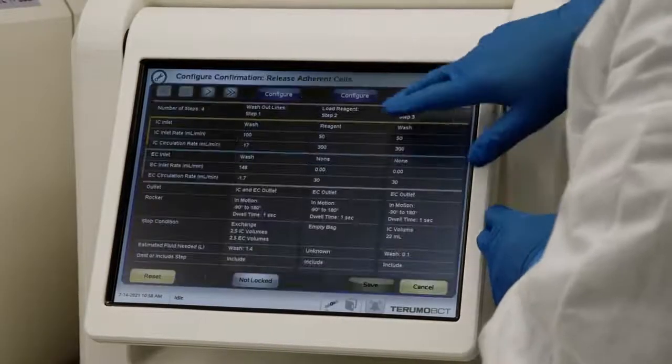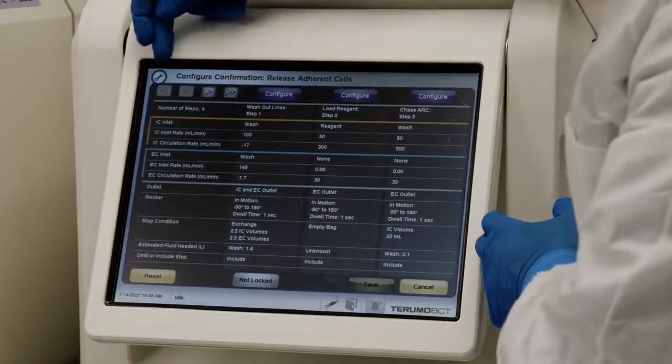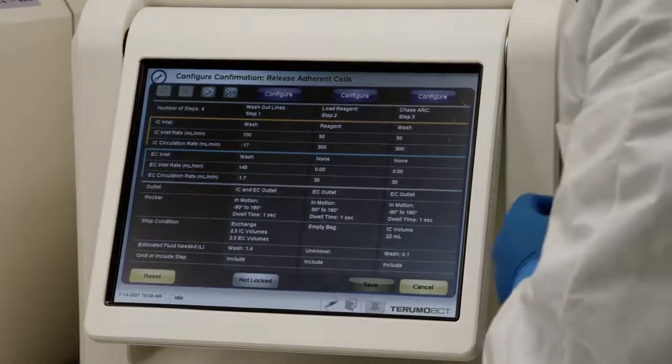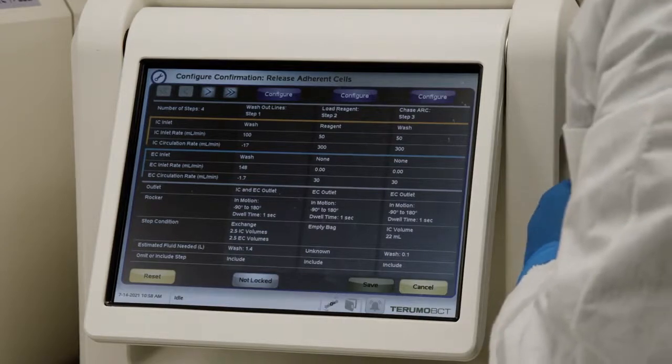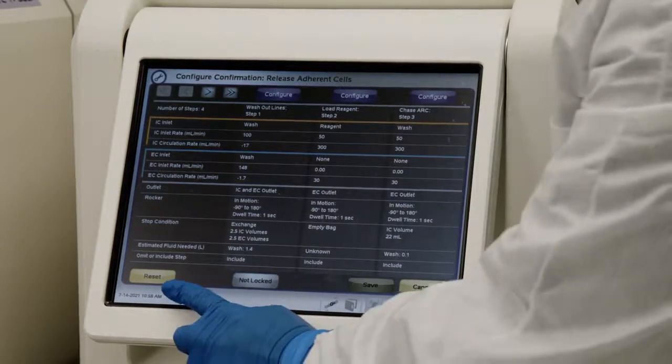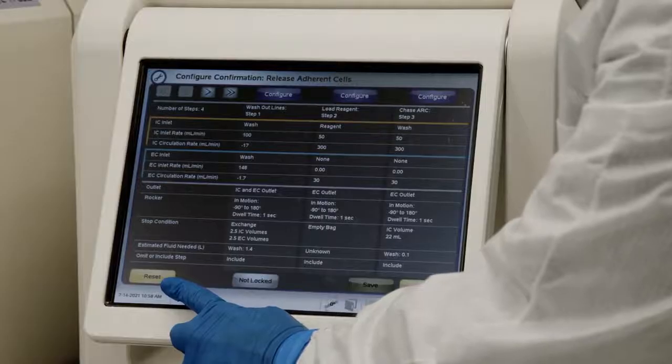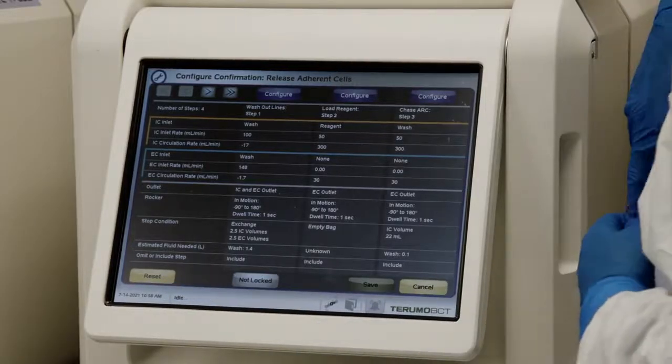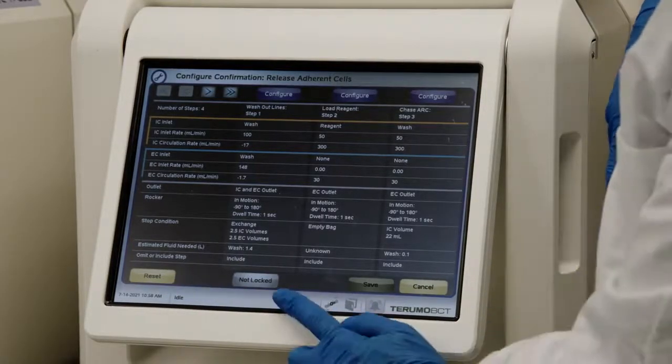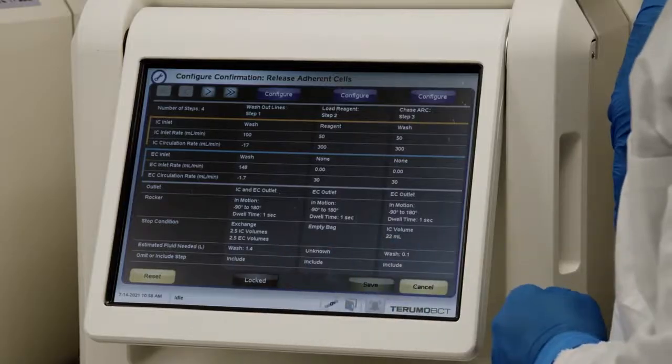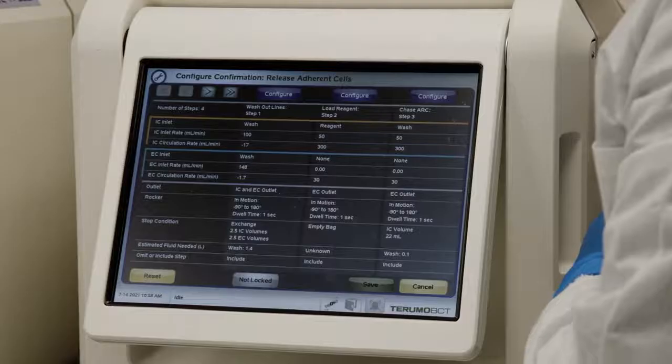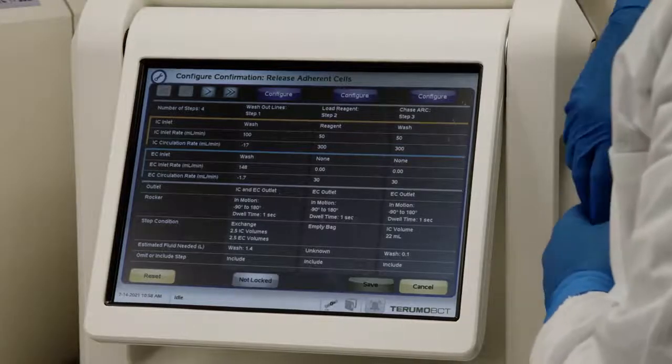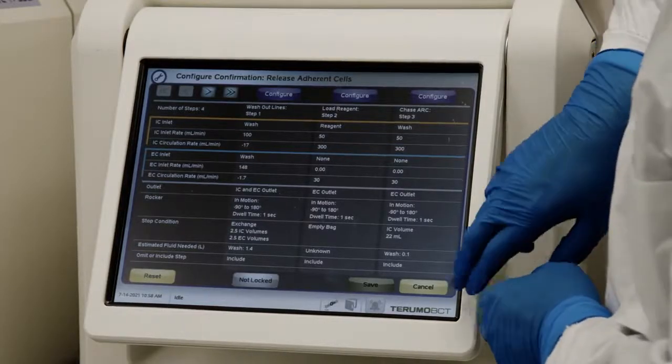On this task settings page, you can see there's a purple button here which is labeled configure and any changes that will be saved here will become the new default task settings. However, you can reset these back to factory defaults by pressing the yellow reset button. Additionally, you can lock these settings such that the operator will not be able to change them when performing a task. Therefore, Quantum is going to be really flexible for your process development needs, but can be locked down with set protocols for GMP operations.